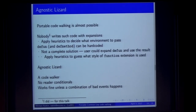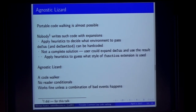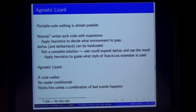I want to present a library called Agnostic Lizard. It is agnostic because it doesn't really know in what world it is, and it doesn't trust that the signs allow you to deduce in what world you are — and it climbs trees, and it's a lizard because it's in the East. I say that portable code walking is almost possible. The treatment of environments which I showed is provably impossible to expand correctly, and I have given the outline to form a proof — it can be formalized. But nobody writes such code with expansions and environments because it's just too complicated and very annoying to debug.